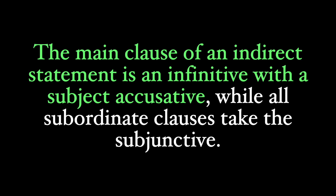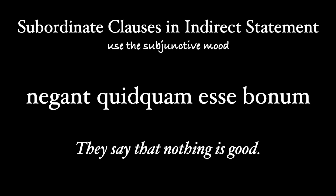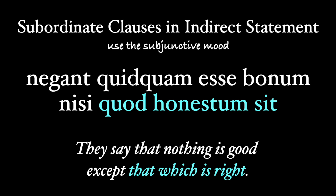So that's the first part of the rule: the main clause of an indirect statement uses the accusative plus infinitive construction. But what if that indirect statement contains a subordinate clause? The verb in that clause will be in the subjunctive mood. For example, going back to "Negant quidquam esse bonum" — the rest of Cicero's quote is "nisi quod honestum sit" — nothing is good except that which is right. We have a relative clause inside an indirect statement, so instead of the indicative, we use the subjunctive sit.